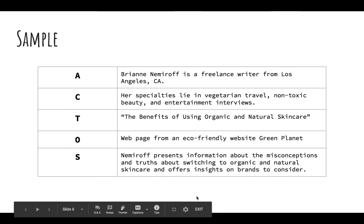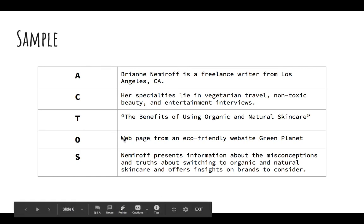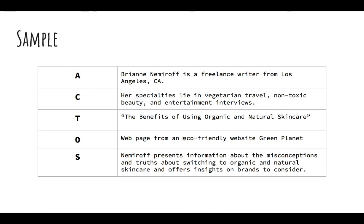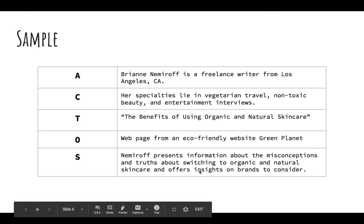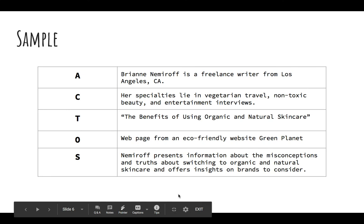Here's my sample from the website I found for the citation. I did a quick search and clicked on her name on the website — she's a freelance writer from Los Angeles, California. Her credentials: she specializes in vegetarian travel, non-toxic beauty, and entertainment interviews. Non-toxic beauty gives her some credibility. The title is 'The Benefits of Using Organic and Natural Skincare.' It is a webpage from an eco-friendly website. Then I have a quick summary: she presents information about the misconceptions and truths about switching to organic and natural skincare and offers insight on brands to consider. That is my appositive.